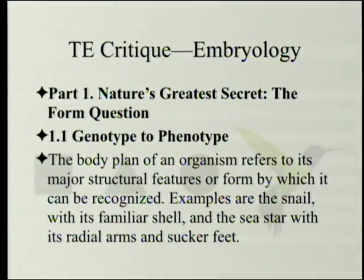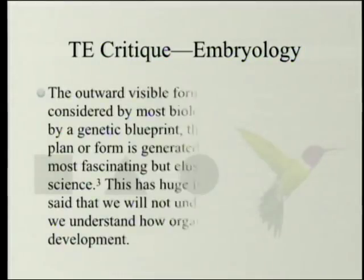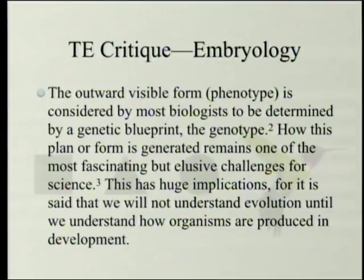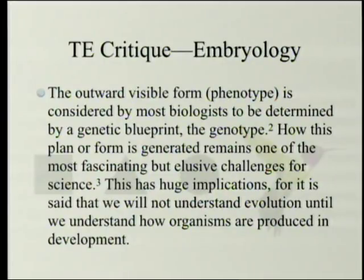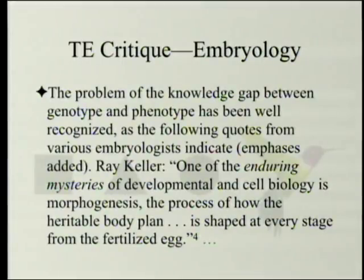The body plan of an organism refers to its major structural features or form by which it can be recognized — for example the snail with its familiar shell and the sea star with its radial arms and sucker feet. The outward visible form or phenotype is considered by most biologists to be determined by a genetic blueprint, the genotype. How this plan or form is generated remains one of the most fascinating but elusive challenges for science, with huge implications for understanding evolution.